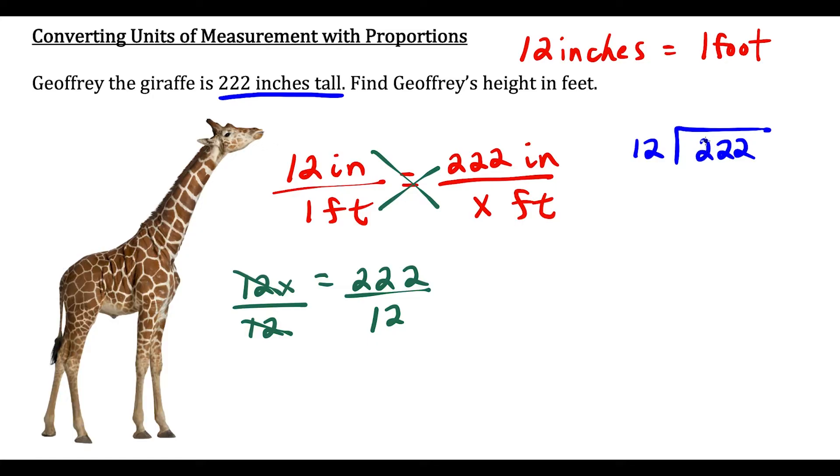12 goes into 2... 2 is too small so we're going to look at 22. 12 goes into 22 once. 1 times 12 is 12 so we'll subtract 12. 22 minus 12 is 10. Now we carry down the 2.